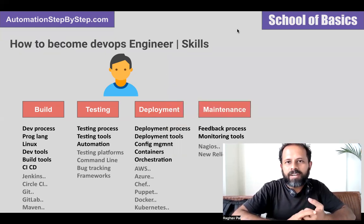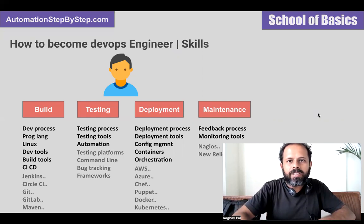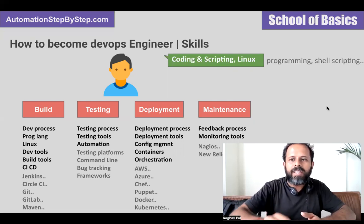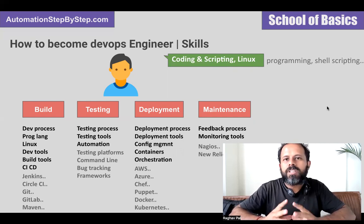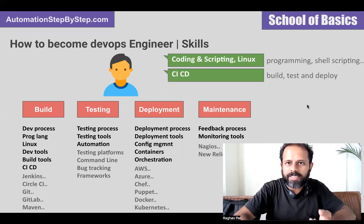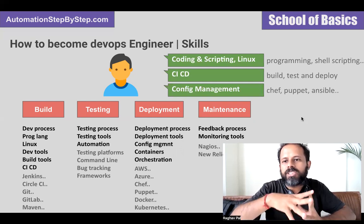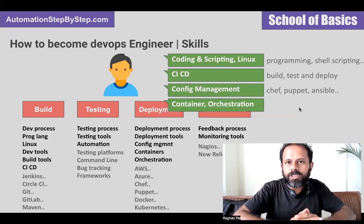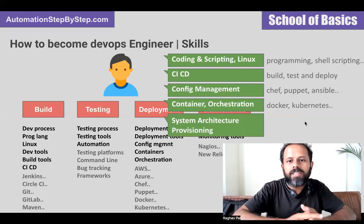How can you become a DevOps engineer and what are the skills required? You should know a coding or programming language, a scripting language, and Linux fundamentals. You can select any programming language — if you have no preference, you can go with Python, and learning shell scripting as well would be great. For CI/CD, you can learn tools like Jenkins for build, test, and deploy. For configuration management, you can learn Chef, Puppet, or Ansible, and understand what the configuration management process is and why we do it.